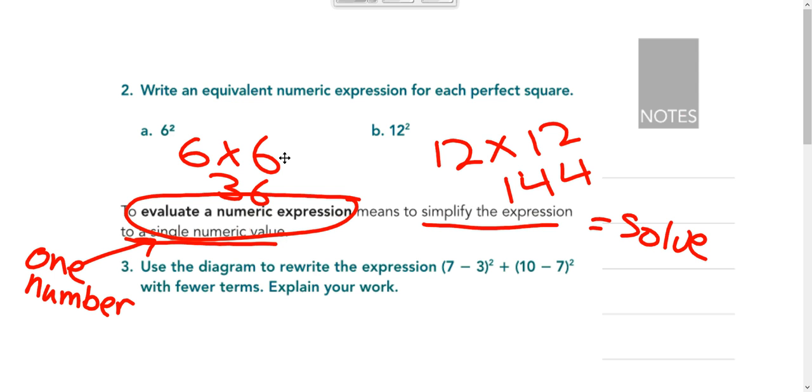And notice how I'm getting away from writing over here equal to, I'm writing it below, more on that later. And then 12 to the second power, so 12 is multiplied times itself two times, and I get 144.